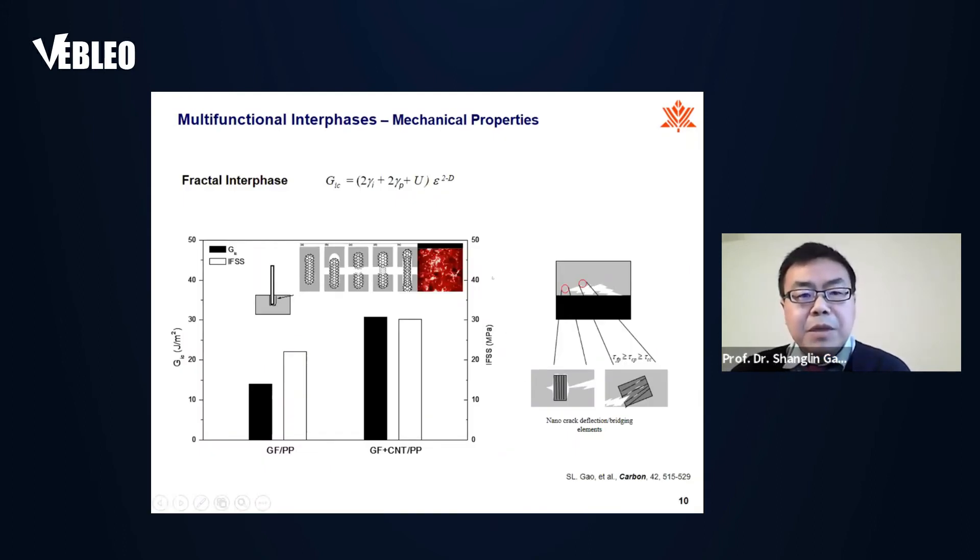So this behavior actually can be explained by this fracture interface equation. That means the energy release depends on the real fracture surface. Here we use the fracture dimension to take consideration of the fracture surface. It's involved with much more complicated or multiscale self-similar behavior, like fiber debonding or fiber bridging. So in this interface, you need more energy to separate it, and the toughness factor, you need a higher interface shear strength or you can get the interlaminar energy release is almost doubled.